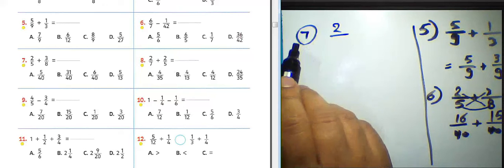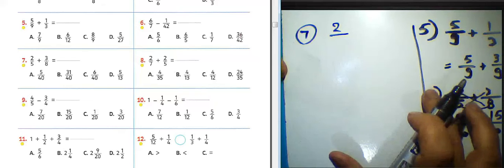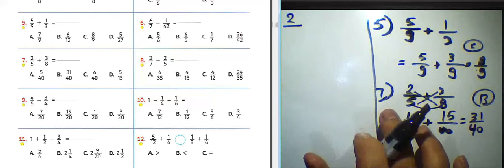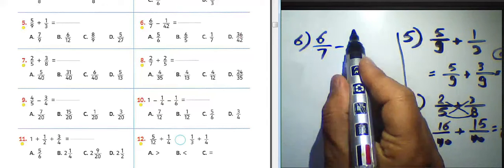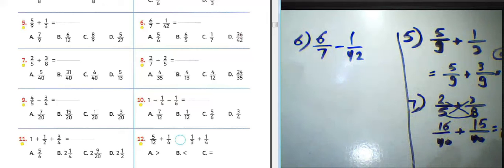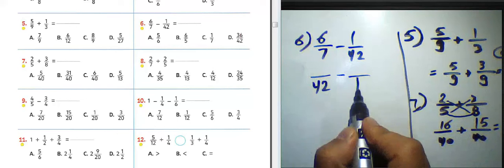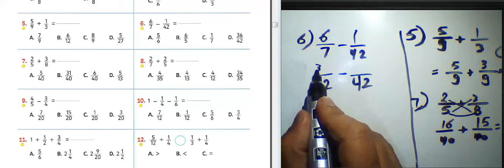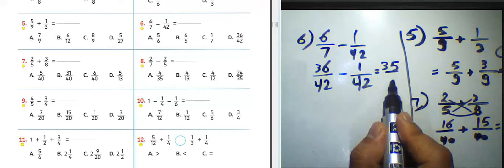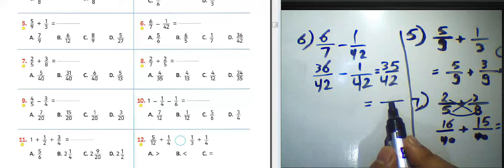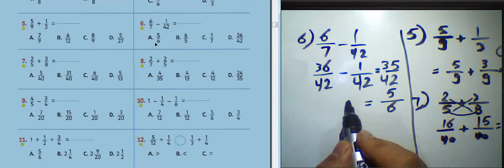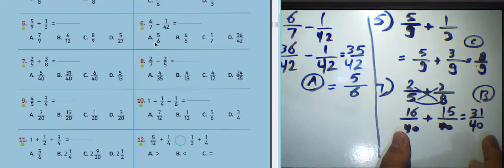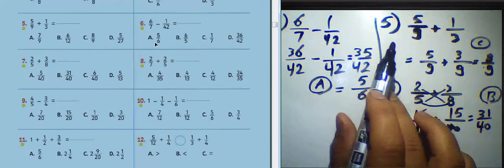Now I will solve question number six: 6 over 7 subtract by 1 over 42. 42 can be divided by 7, so 42 is the least common multiple. 42 divided by 7 equals 6, and 6 times 6 equals 36. Write 1 here; 36 minus 1 equals 35. Write 42 in the denominator. Simplify by dividing by 7: 35 divided by 7 equals 5, and 42 divided by 7 equals 6. So you must choose letter A about question number six, and letter B about question number seven.